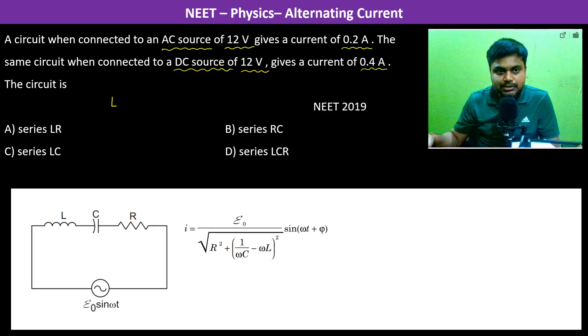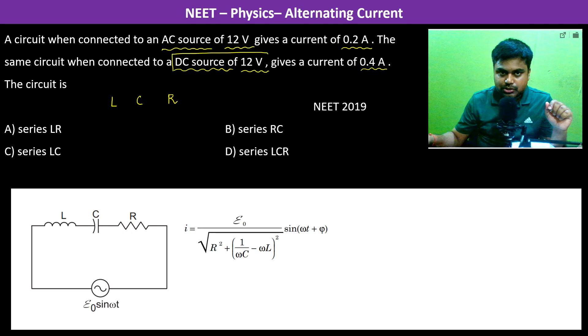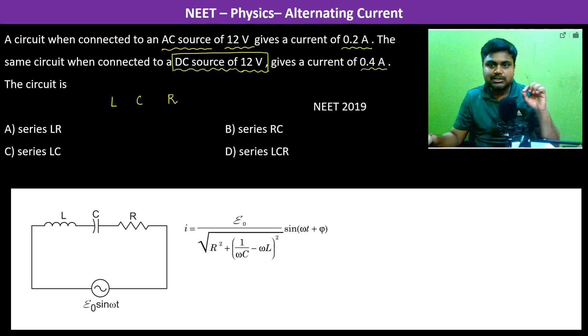Let the circuit have all the components L, C and R. Especially capacitance. If it is connected to a DC source, then what happens is the capacitance acts as if it is an open circuit.